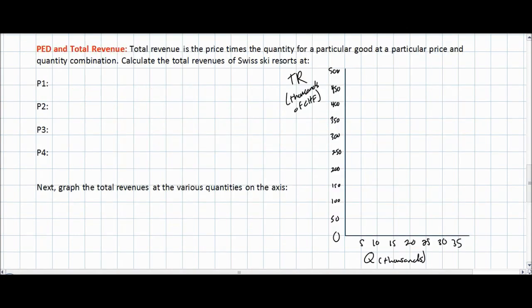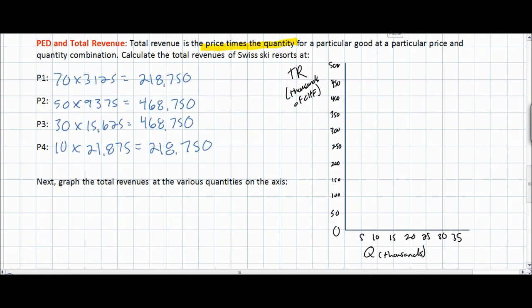Next we're going to talk about the impact that the price elasticity of demand for ski lift tickets has on the revenues of producers — in this case ski resorts in Switzerland — as the price of the good changes. Total revenue is simply the price of a good times the quantity of goods sold. We were given four different price and quantity combinations, so we can calculate the total revenues in the ski industry in Switzerland at each of these prices.